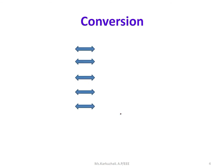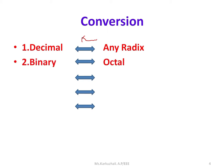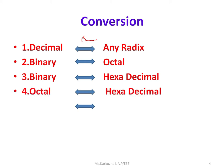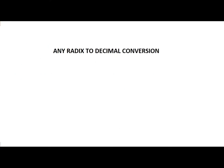The conversion systems we have are: decimal to any radix conversion, or any radix to decimal. We can convert either way. Similarly, binary to octal or octal to binary, binary to hexadecimal and vice versa, octal to hexadecimal and vice versa, and one radix to any other radix. We are going to discuss any radix to decimal conversion.